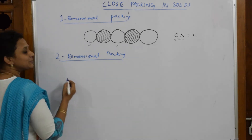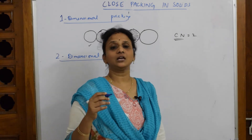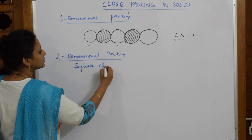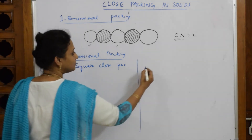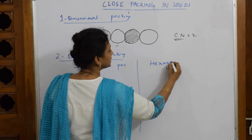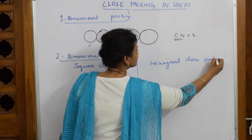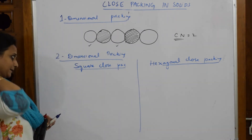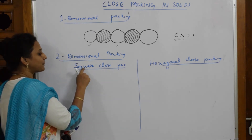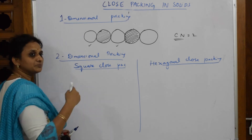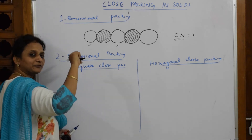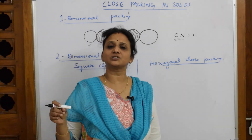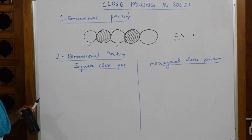Now coming to two dimensional packing — this is of two types as noted: square close packing and hexagonal close packing. In square close packing, as the name suggests, when atoms are packed they resemble or form a perfect square arrangement in two dimensions.